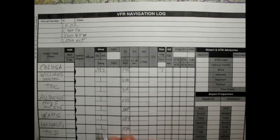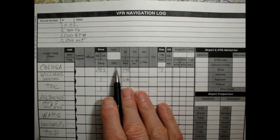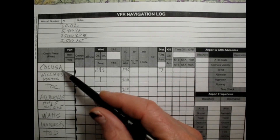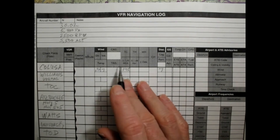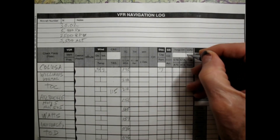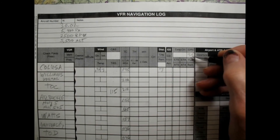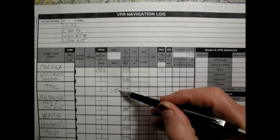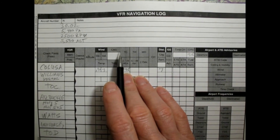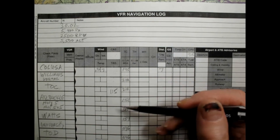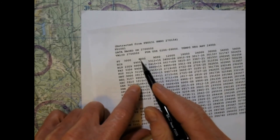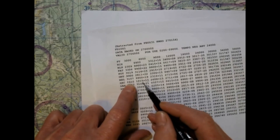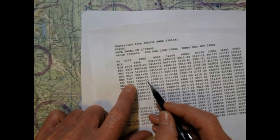Back to the NAVLOG. Our true airspeed is 115 knots and our gallons per hour is 7.5. Now we want to calculate our calibrated airspeed, and from that we can figure out what our indicated airspeed should be. To calculate that, we need our pressure altitude and the temperature. At 6,000 feet the temperature is plus 17°C, and since we're close to 6,000 feet, we'll use 17°C.